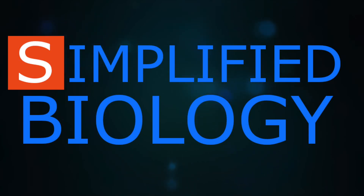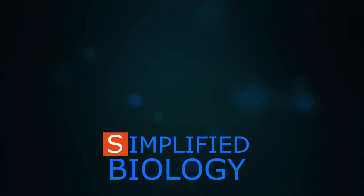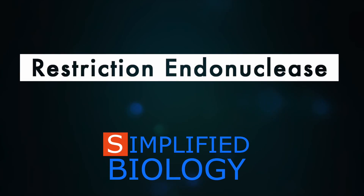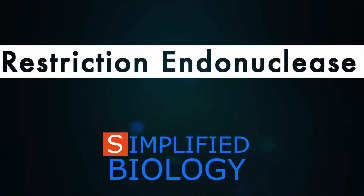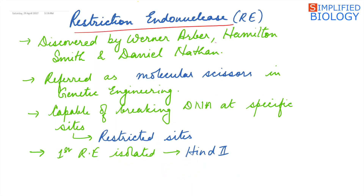Hello friends, welcome to Simplified Biology. Today's topic is Restriction Endonuclease. Restriction endonuclease was discovered by Werner Arber, Hamilton Smith, and Daniel Nathans.